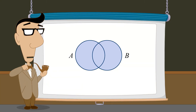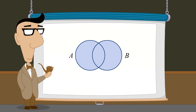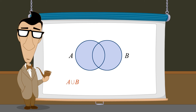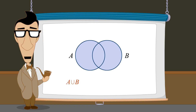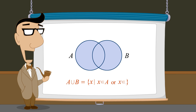Using SetBuilder notation, we can write the definition of the union of two sets formally as: the union of sets A and B is the set of all elements X such that X is a member of A or X is a member of B.